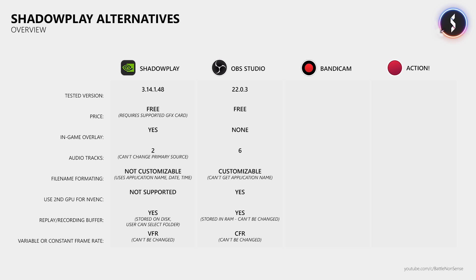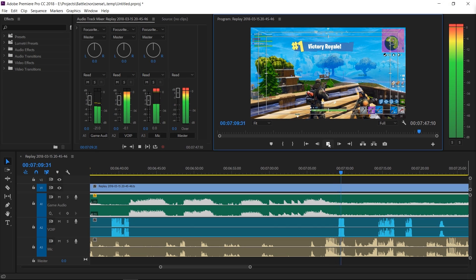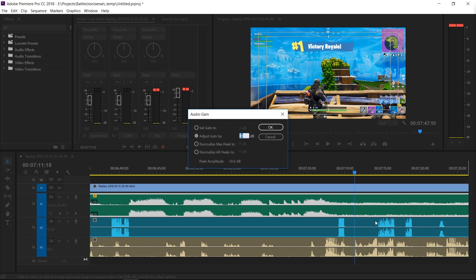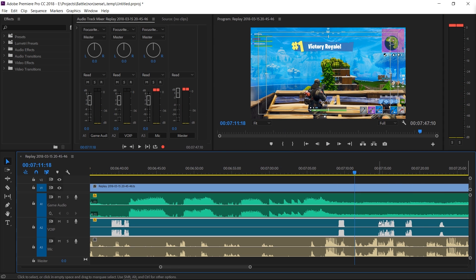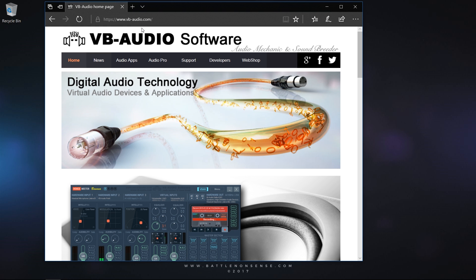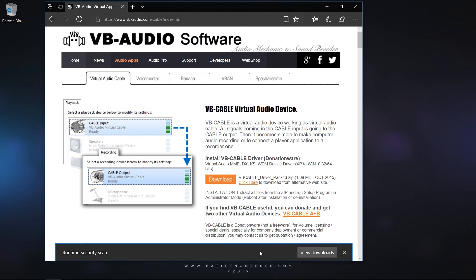OBS on the other hand is a free open source software which is primarily used for streaming, but it is also a very powerful capture software. Its biggest downside is that it does not provide an in-game overlay, so unless you have OBS running on a second monitor, there is no way to tell if OBS detected your game, if it is currently recording or streaming, or if the replay buffer is on or was saved. What OBS does really great is audio, as your recordings can have up to 6 different audio tracks, which is great if you want to put the game audio, Discord, your microphone and in-game VoIP on different tracks, making editing your gameplay a lot easier. In the description down below you can find a link to a video where I explain in depth how you create such a setup.